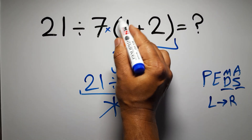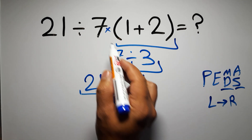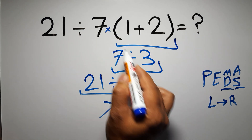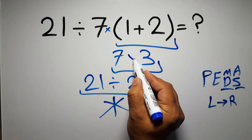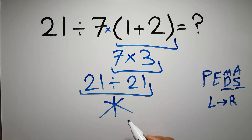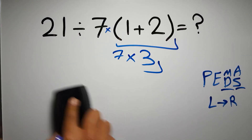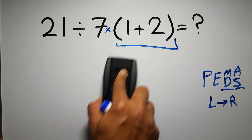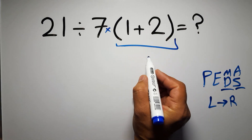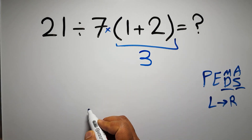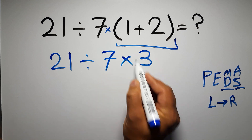So according to the order of operations, first we have to do this parentheses, then this division, and finally this multiplication. If we do this multiplication before this division, it is wrong. So first, the parentheses: 1 plus 2 gives us 3, so we now have 21 divided by 7 times 3.